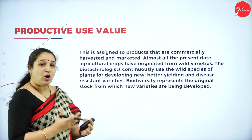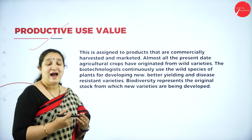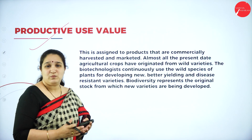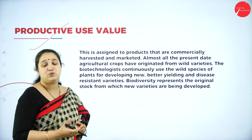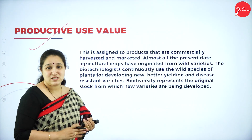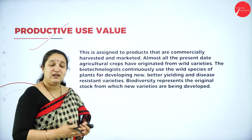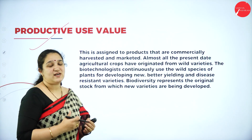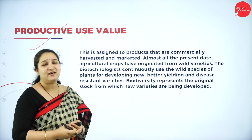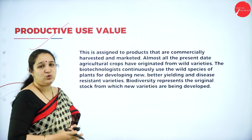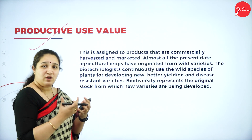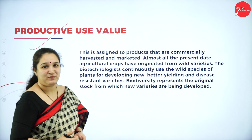Next is the productive value. These are the products derived from biodiversity that we market for economic value. Biotechnologists use the original species of plants or crops, and ongoing research allows us to derive crop plants that are disease-resistant and can give a lot of yield in a very short time. The original stock used for this research comes from the original species — that is, our biodiversity — which we use for productive purposes, to produce large quantities of crops or medicines that we then market.